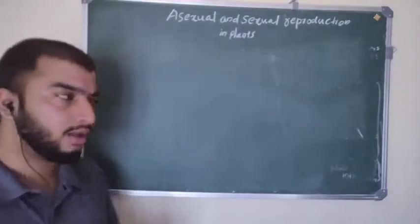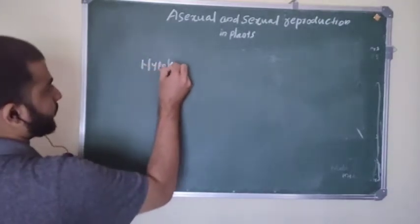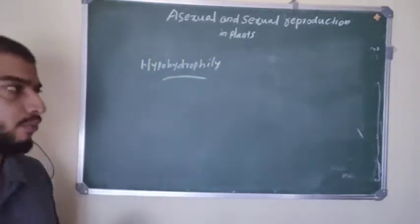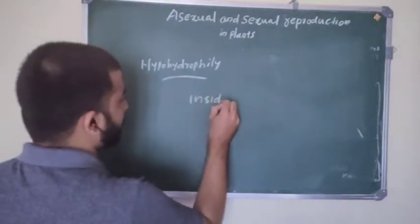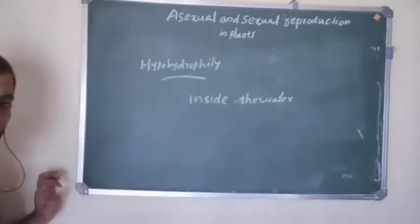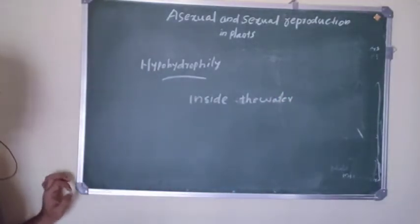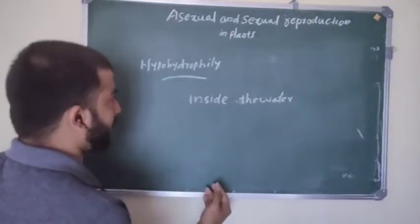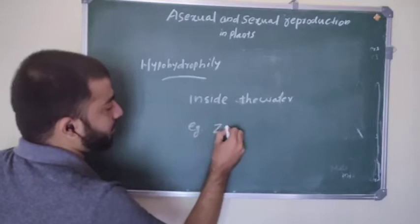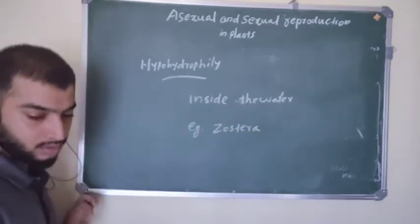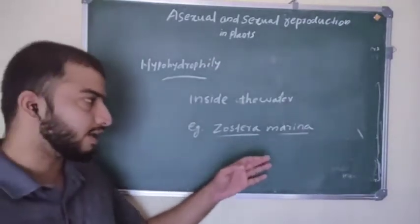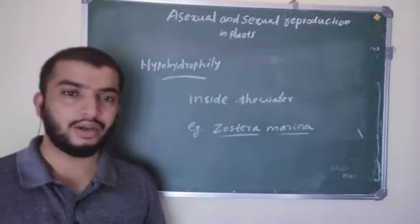The next type is hypohydrophily, which means pollination takes place inside the water. In epihydrophily, pollination takes place at the surface of the water level, while in hypohydrophily it takes place inside the water. An example of a hypohydrophilous plant is Zostera marina.